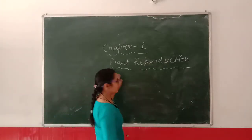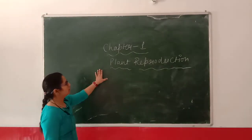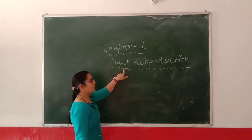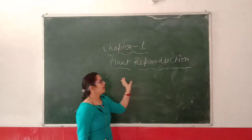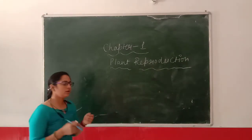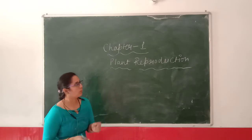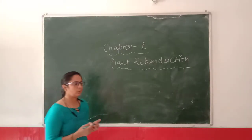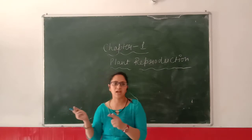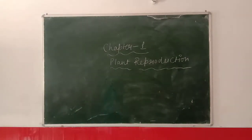Good morning everyone. Welcome to this video. Today we are going to start chapter 1, that is plant reproduction, in which we are going to learn about which types of reproduction occur and which different parts of a plant are reproducible. We will also learn about seeds. That is also linked with chapter 5 in EBS, and we will do some activity based on the EBS book as well.